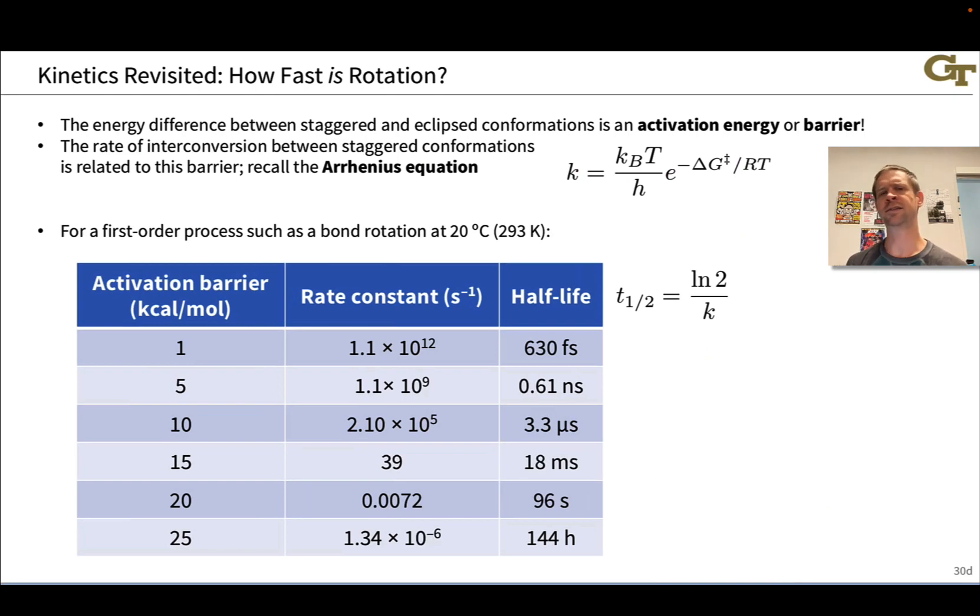So what we can do to get a sense of the kinetics is apply the Arrhenius equation to the activation barrier which we could call E sub A or delta G double dagger to emphasize that the eclipsed conformation is a transition state.